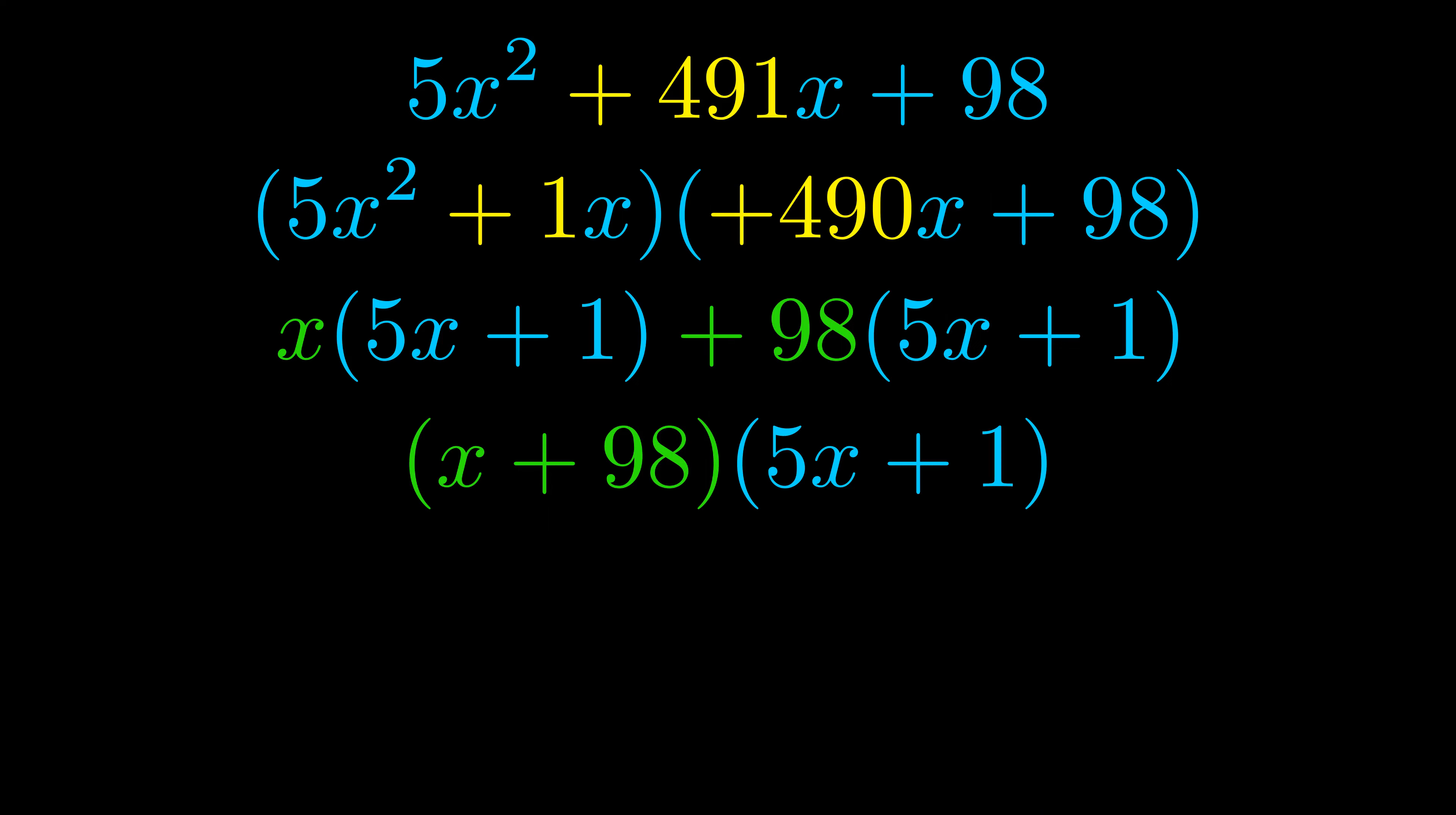Those blue values will become one of our factors and we will combine the two green values, the GCFs that we pulled out, to get the other one. And that is our fully factored equation.